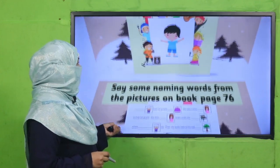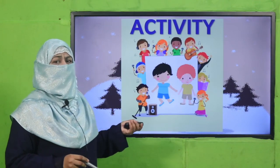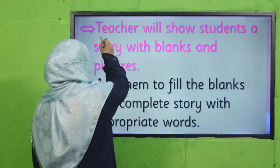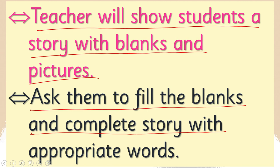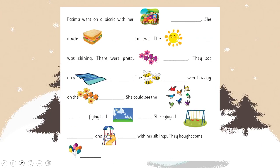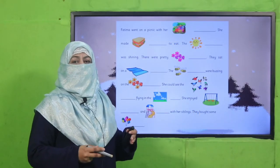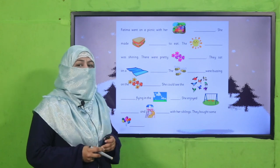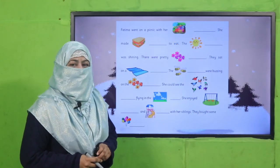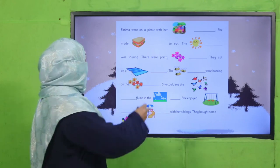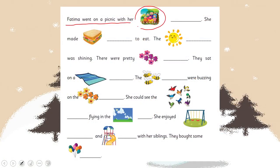So this is what we are going to do — look at the word bank and complete the text. But before that, let's do an activity. The teacher will show students a story with blanks and pictures, and ask them to fill the blanks with appropriate words. Teacher, I brought an example for you — you may take the same or use another for students to practice. Pause the video, enjoy the activity, and then come back. Are you done? Good job! It was easy — 'Fatima went on a picnic with her family. She made a sandwich to eat.'